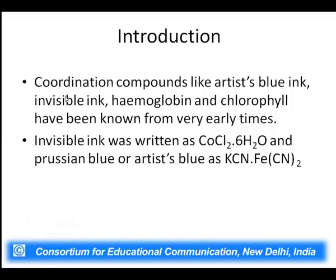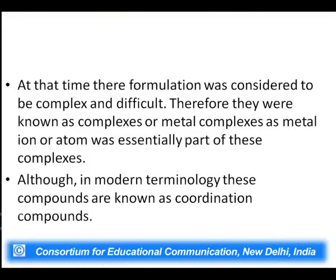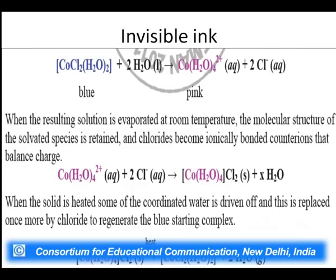Invisible ink was written as cobalt chloride CoCl2·6H2O, and Persian blue was written as KCN·FeCN2. Although in modern days we know much more in detail about their formulation, the original names still continue somewhere. In modern terminology these are known as coordination compounds. In previous days, this invisible ink was basically this complex compound of cobalt.